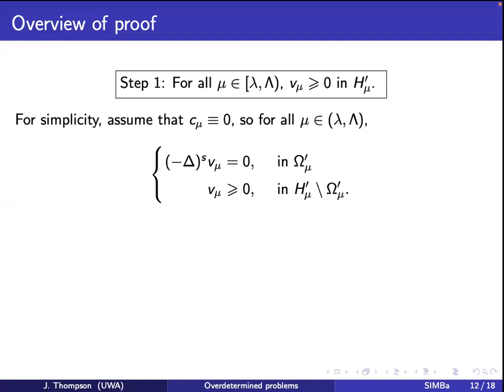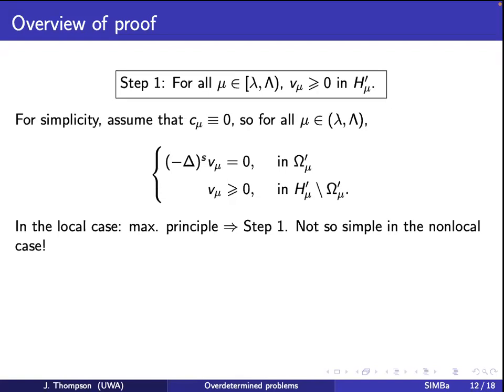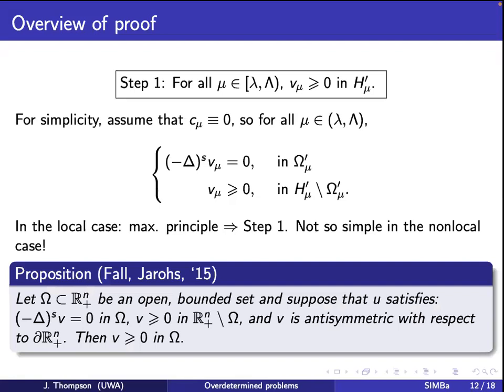The complication is that the function is also odd with respect to a plane, so the only function that's non-negative everywhere and odd is zero — which is trivially what we want to show. Instead, you need a non-local maximum principle that uses the fact that you're symmetric with respect to this plane. This was obtained by Fall and Jarohs in 2015, who showed that in this context V is indeed non-negative.